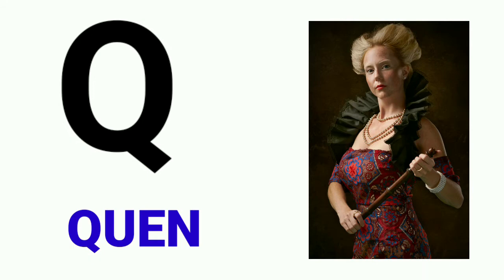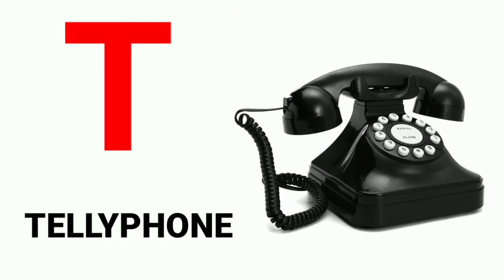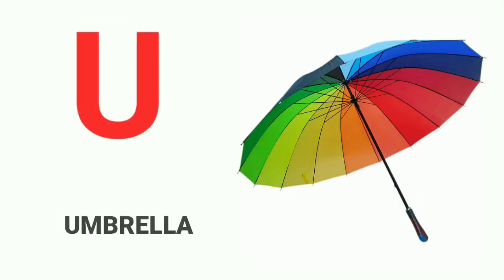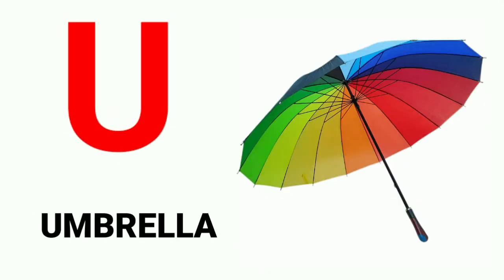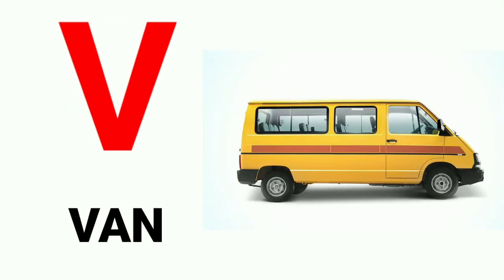Q for queen, R for rose, S for sun, T for telephone, U for umbrella, V for van.